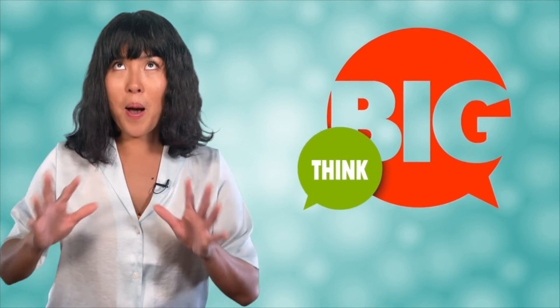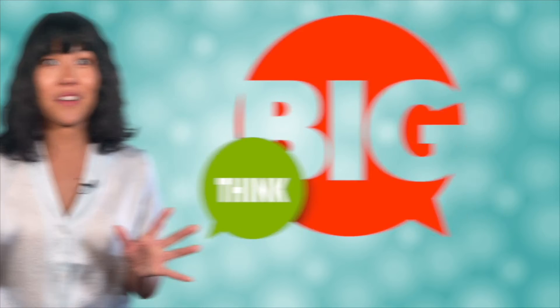Sometimes we want to make a Punnett square that shows the inheritance of two traits together. In fact, this is how Mendel showed that the traits he studied in pea plants were inherited independently from one another. But to do this, we're going to need a bigger Punnett square. Think much bigger! This is called a two-factor Punnett square.